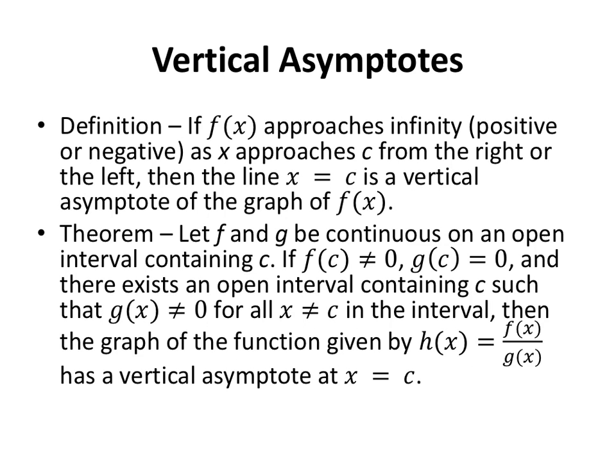Vertical asymptotes. Now we can have our definition. If f(x) approaches infinity, positive or negative, as x approaches c from the right or the left, then the line, the vertical line x = c is a vertical asymptote of the graph. And here's a theorem about that.